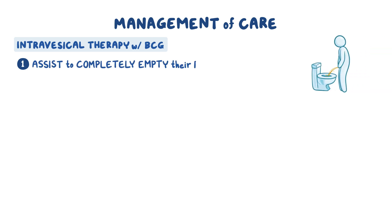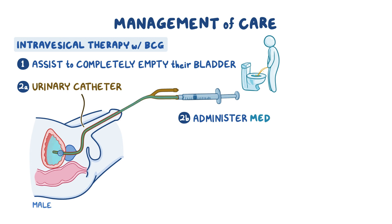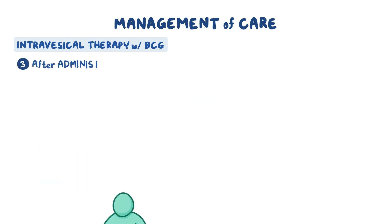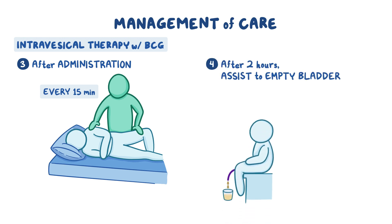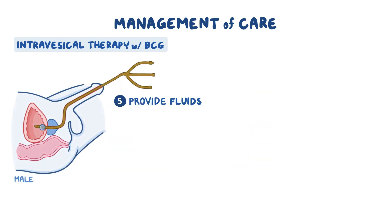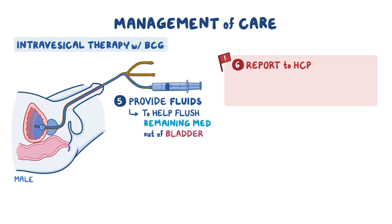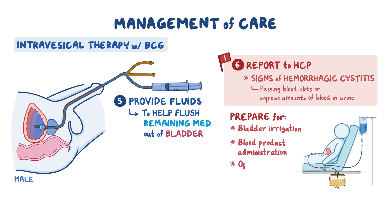If your client is prescribed intravesical therapy with BCG, begin by assisting them to completely empty their bladder, then insert a urinary catheter and administer the medication. After administration, assist the client to rotate their position every 15 minutes to increase the medication's contact with the bladder surface. After two hours, assist them to empty their bladder in a sitting position to reduce splashing risk, then provide fluids to flush remaining medication. Report signs of hemorrhagic cystitis — such as passing blood clots or copious hematuria — and prepare for bladder irrigation, blood product administration, or operative intervention as prescribed.